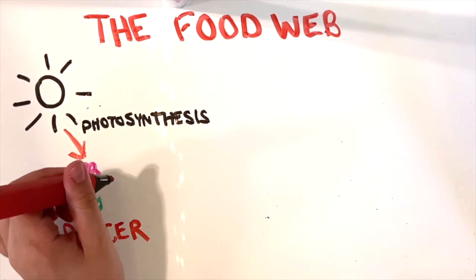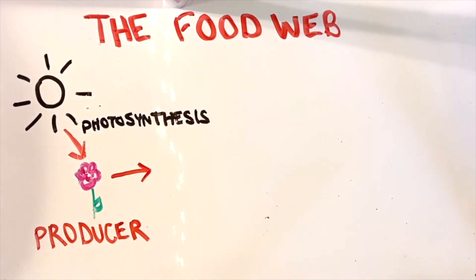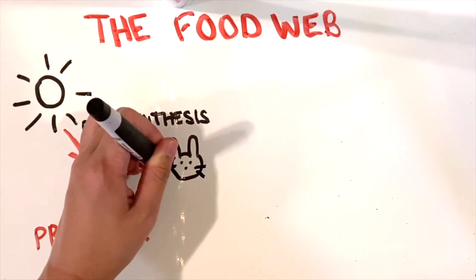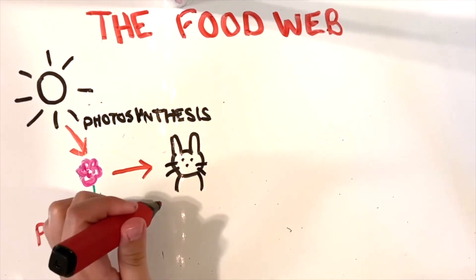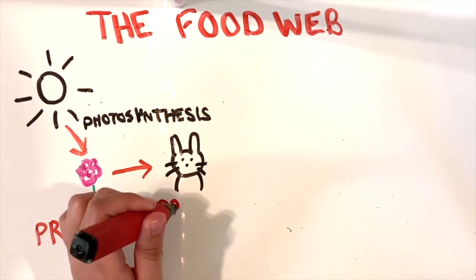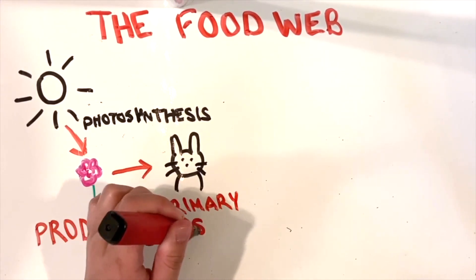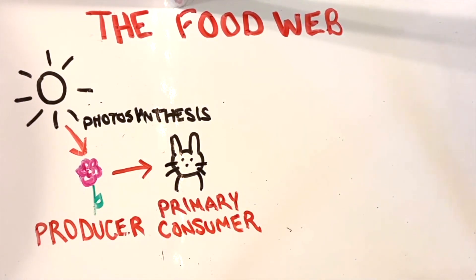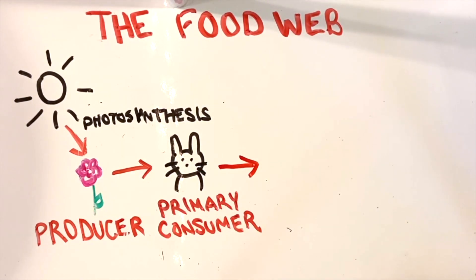Because animals can't make their own food like plants and have to eat other animals or plants to get their energy, the next step in the food web is called the primary consumer — like this bunny we have here. By eating plants, primary consumers are able to get the energy they need to survive, which has been transferred all the way from the sun through the plant to the primary consumer.